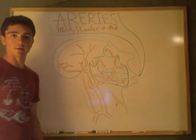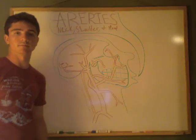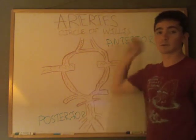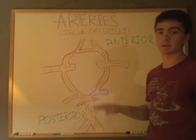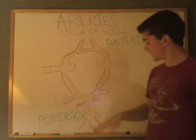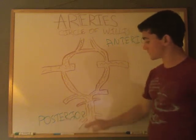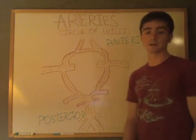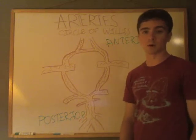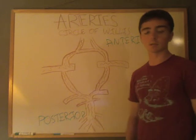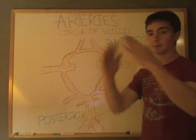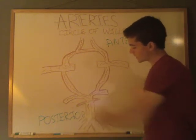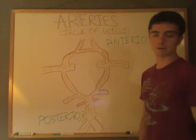Now we're going to start talking about the circle of Willis — the blood supply to the brain. Here we have the circle of Willis; we're looking at the posterior and anterior view. Starting at the bottom in the posterior, these two leg-like structures are the vertebral arteries, coming up from the subclavian arteries. They join together to form the basilar artery, and coming out from that are some cerebellar arteries we won't go into detail about.